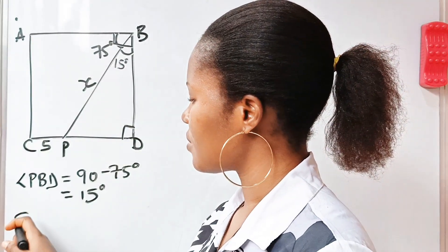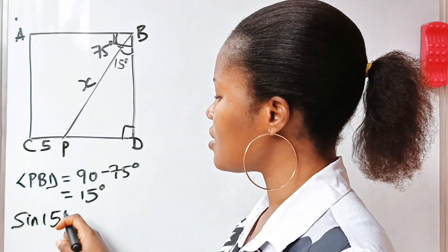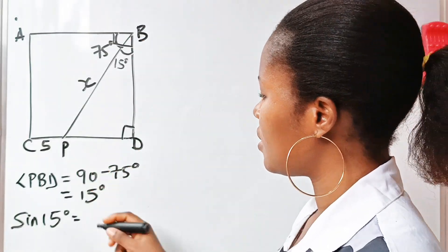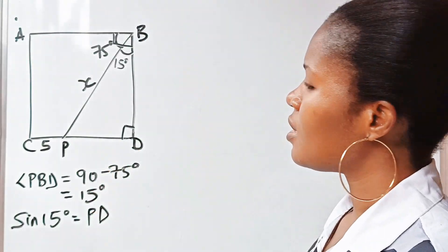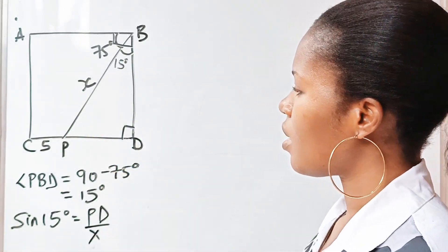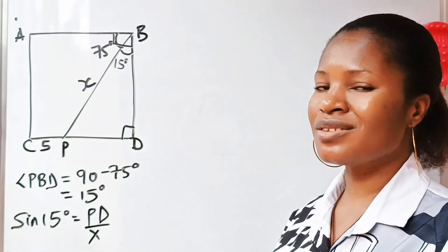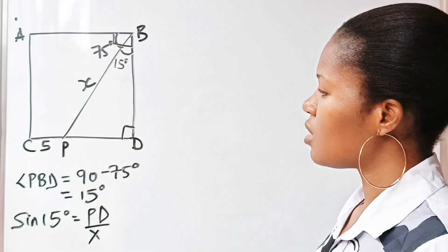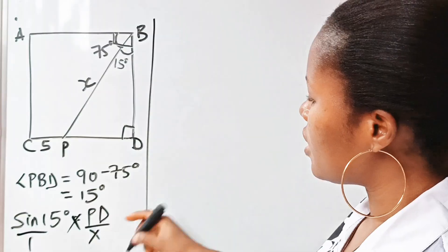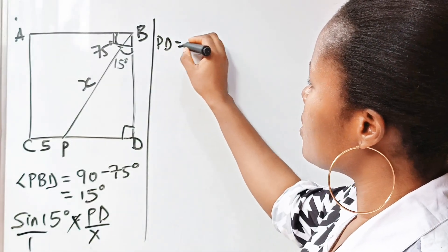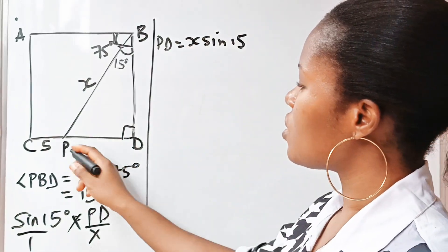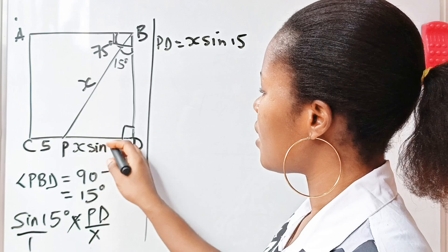Sine 15 degrees — remember, sine is opposite over hypotenuse. The opposite is PD and the hypotenuse is X. So sine 15 equals PD over X. We are trying to bring X into the equation because that is what we are asked to find. Cross-multiplying, PD is equal to X·sine 15.